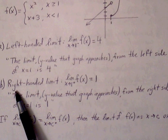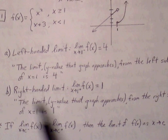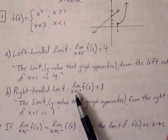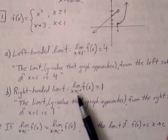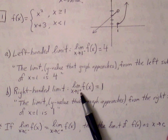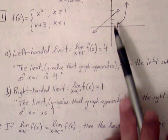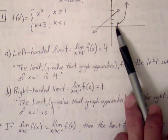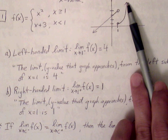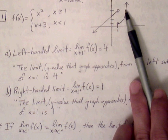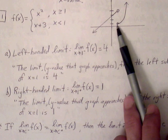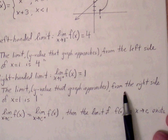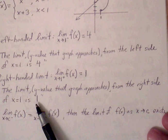Similarly, the right-hand limit looks at the graph approaching the x value from the right side. In this case, approaching x equals 1 from the right, we follow the graph and see that the y value is approaching 1. So the limit from the right side of x equals 1 is 1.